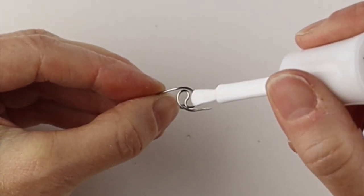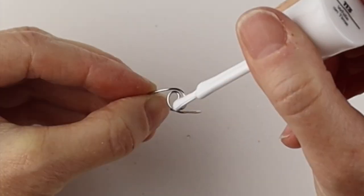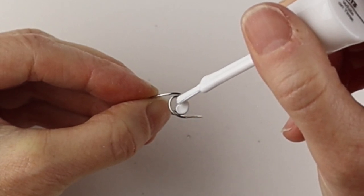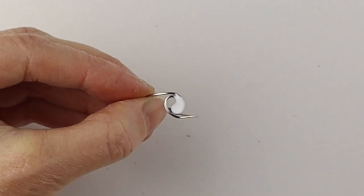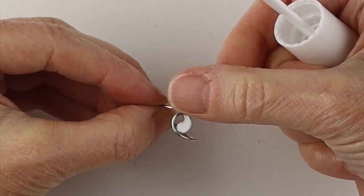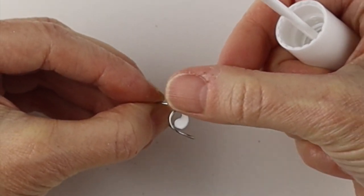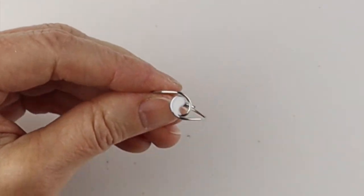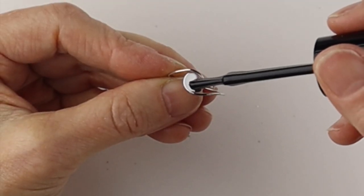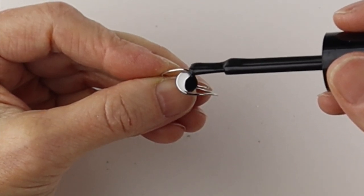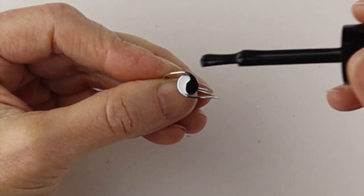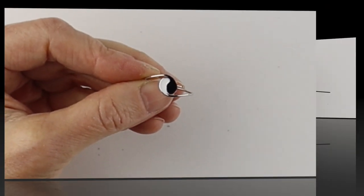Grab your white nail polish and just wiggle it in here to fill up that space with white. Go up as far as you want. If you get too much, you can just take a little bit off. Turn it around and then we'll get the black and just wiggle it on the other side. Bring it up as much as you want and let that dry.